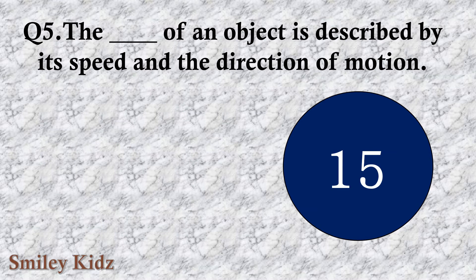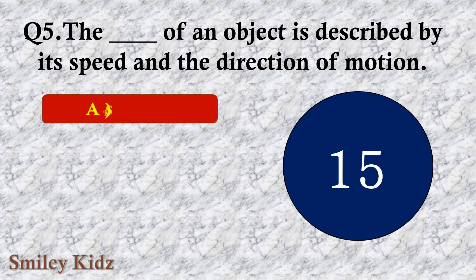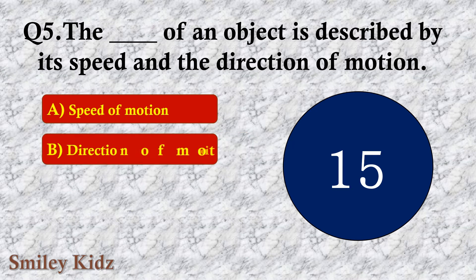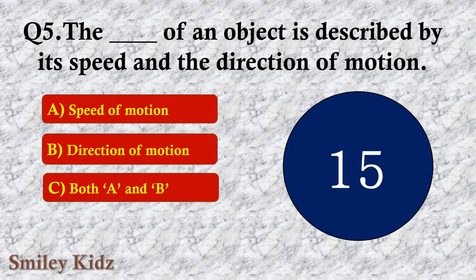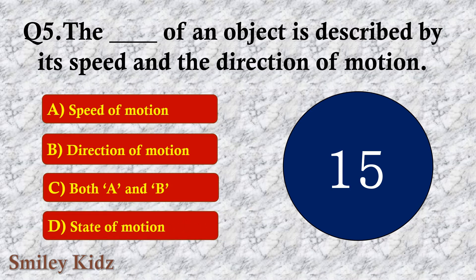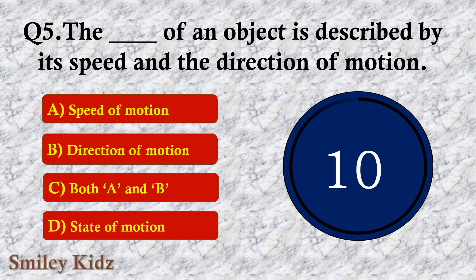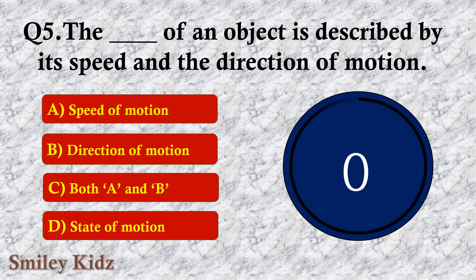Question number five: The dash of an object is described by its speed and the direction of motion. The options are A. Speed of motion, B. Direction of motion, C. Both A and B, or D. State of motion. The right answer is option D — State of motion. The state of motion of an object is described by its speed and the direction of motion.